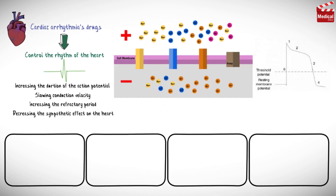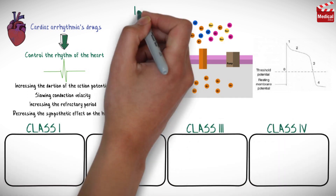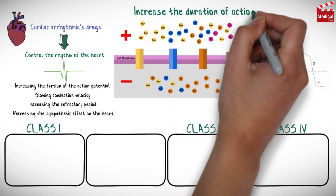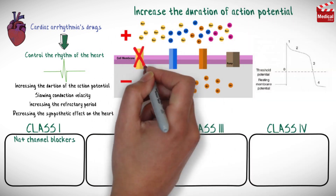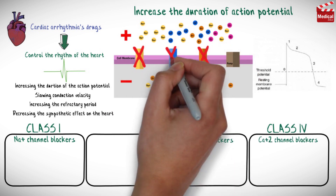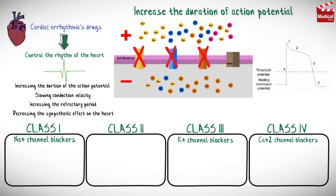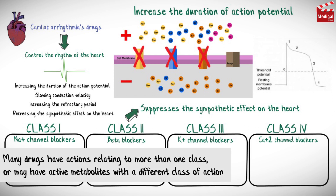Antiarrhythmic drugs are divided into four major classes according to their mechanism of action. Classes 1, 3, and 4 increase the duration of cardiac cell action potential — these include sodium channel blockers, potassium channel blockers, and calcium channel blockers. Class 2 suppresses the sympathetic effect on the heart and includes beta blockers.